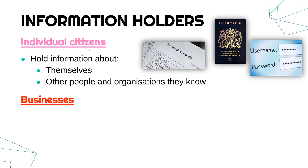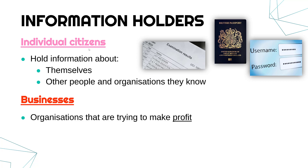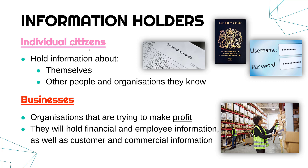Looking more at groups: businesses are organisations trying to make a profit. There's a wide range of businesses and the actual information held would depend on what they're doing, but at a basic level most businesses will hold information on financial aspects, employee information — such as where employees live, how to contact them, how much money they make — as well as customer and commercial information. Customer information might be things like usernames and passwords; commercial might be things like stock levels in a warehouse.